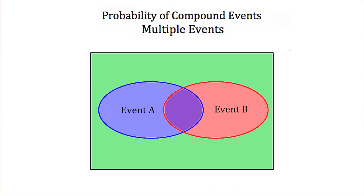This green box in front of us is a Venn diagram. The green box represents every possible outcome. The blue ellipse represents the outcomes that satisfy event A. The red ellipse satisfies all the outcomes of event B. This overlap in purple is all the outcomes that satisfy both event A and event B at the same time.